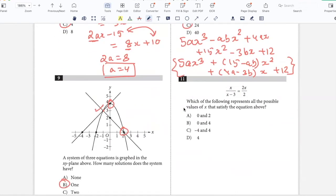Which of the following represents all the possible values of X that satisfy the equation above? I can see that 0 will satisfy this because if I put 0 on the left hand side and on the right hand side, I'll get 0. So 0 definitely is a solution. I can cancel the X's, so 1 over X minus 3 equals 1, therefore X minus 3 equals 1, so X is 4. The solutions would be 0 and 4, option B.